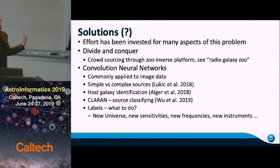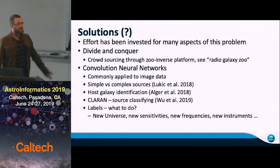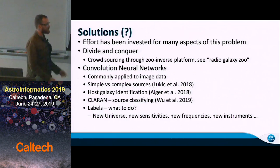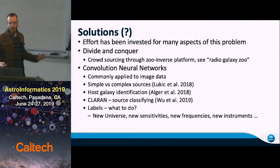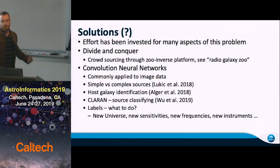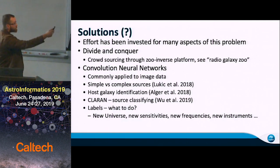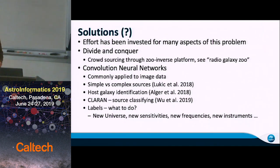We are looking at a new volume of the universe with new instruments, often at new sensitivities and new frequencies. So how well do current labels extrapolate? It's hard to tell. How are you biasing yourself by using labels constructed from the local universe? And even if you change something like the frequency you're observing at with these new instruments, how have you biased yourself there? Because new or different frequencies often mean different physics.